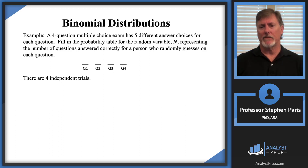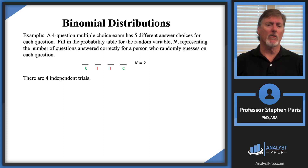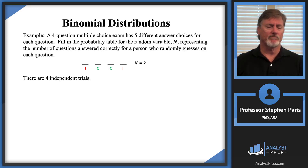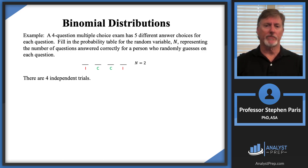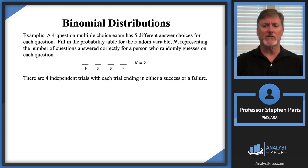What would it mean for Cap N to equal two? An example would be if the person got the first and last questions right and missed the middle two. There are other situations too — maybe the person got the second and third correct. In the context of binomial distributions, we don't talk about correct or incorrect; we talk about successes and failures. So there are four independent trials, each ending in either a success or a failure.